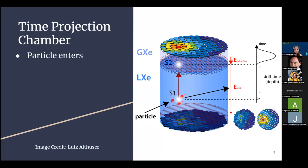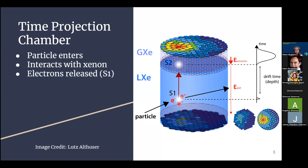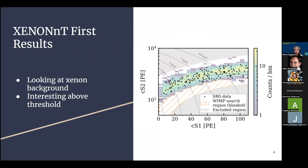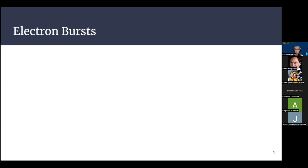The way we're searching for WIMPs is with a time projection chamber. A random particle will enter the chamber and interact with the liquid xenon. This reaction releases electrons and photons, and is referred to as an S1 signal. The electrons will then travel up due to the electric field in the chamber and release more light when they hit the gaseous xenon. This is the S2 signal. Finally, the remaining electrons are extracted by the cathode. There is still an ill-defined signal being seen in multiple detectors worldwide.